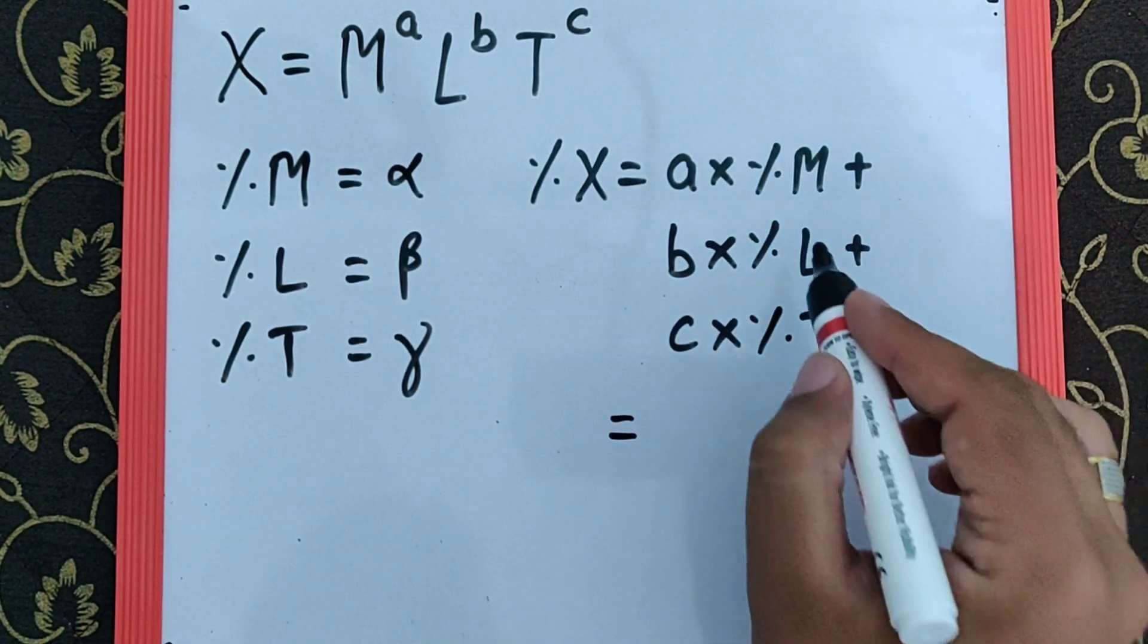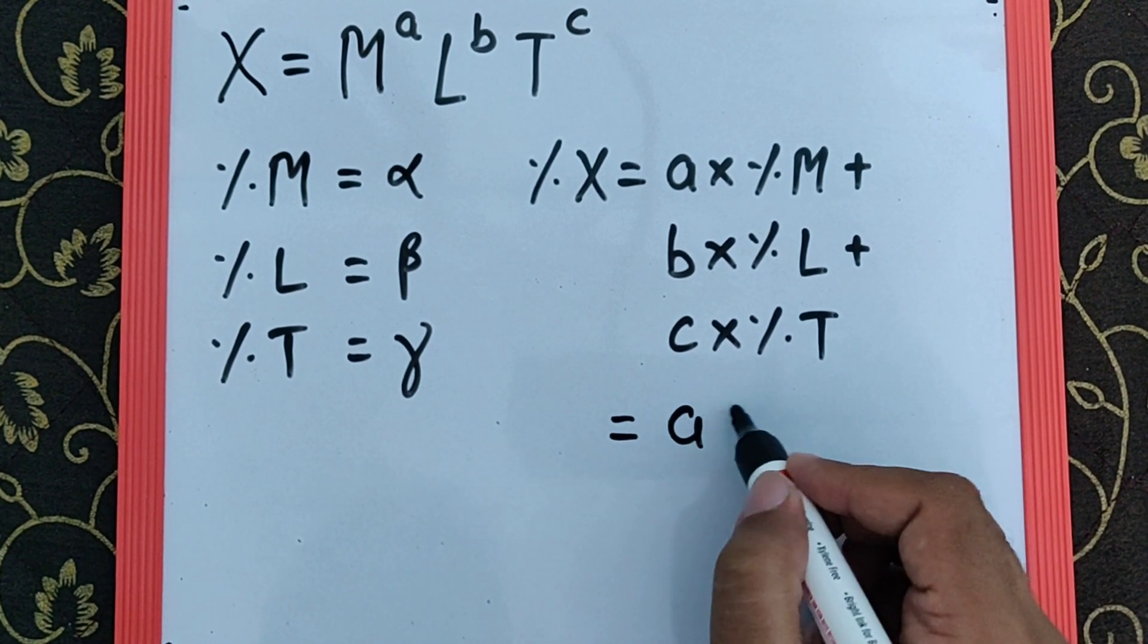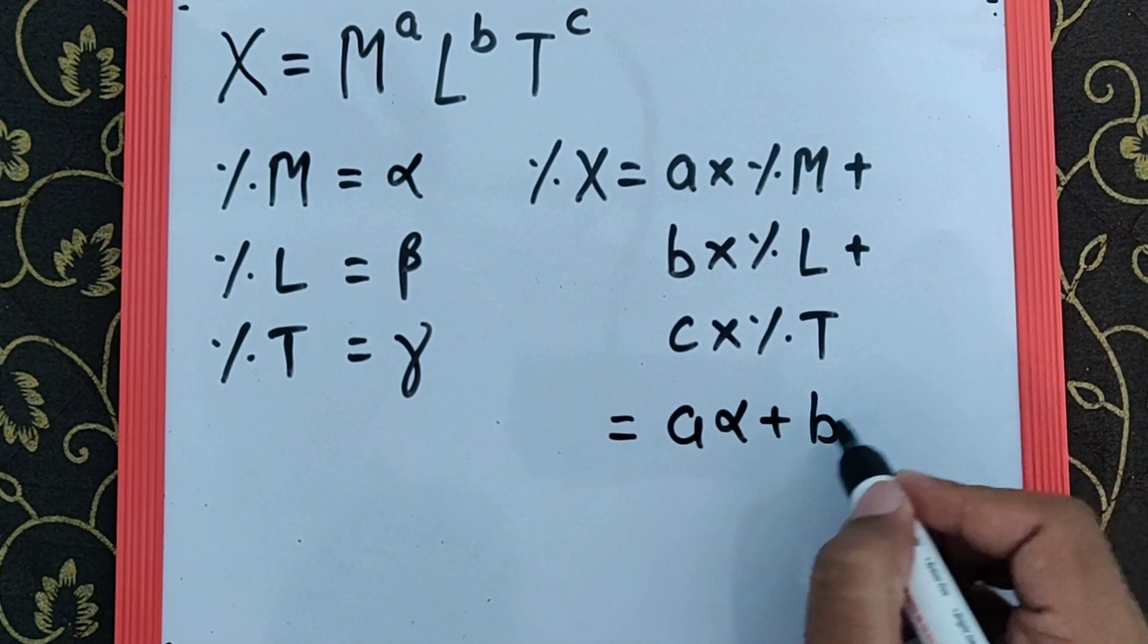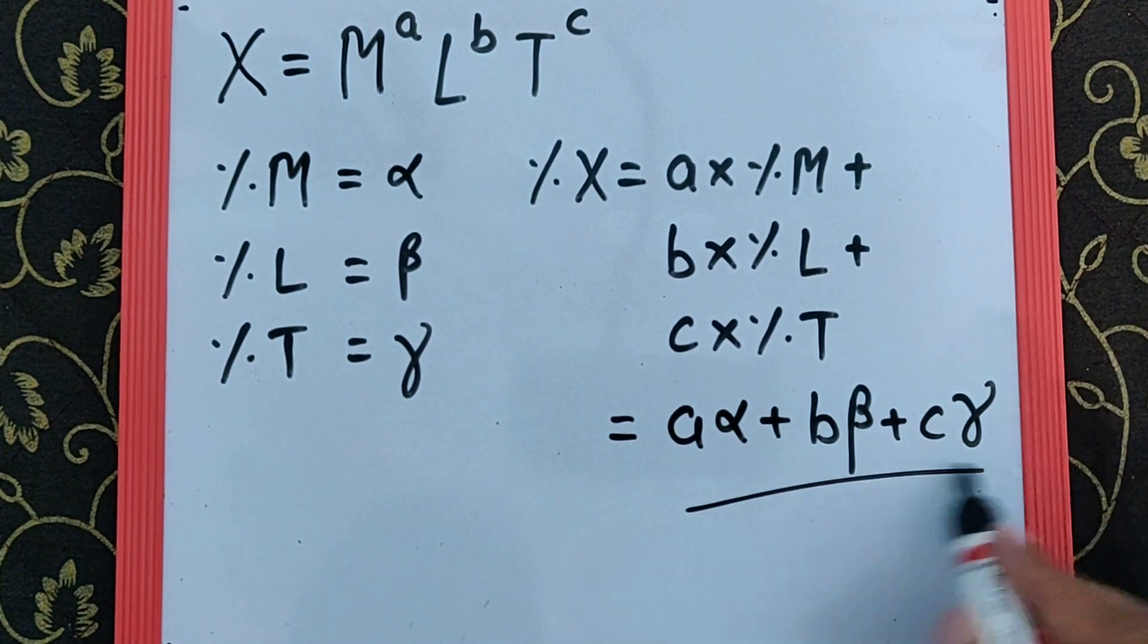By using the percentage error in M, L, and T as alpha, beta, and gamma, we get a alpha plus b beta plus c gamma as the final answer.